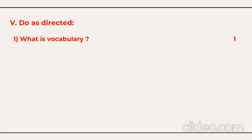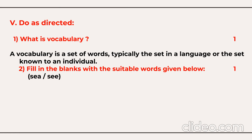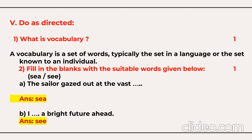Next question is 'do as directed.' First, what is the meaning of vocabulary? Vocabulary is a set of words, typically the set in a language or the set known to an individual. Then you need to fill in the blanks using homophones. For example: 'The sailor gazed out at the vast SEA.' And: 'I SEE a bright future ahead.' That's one mark.